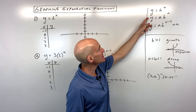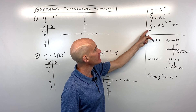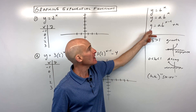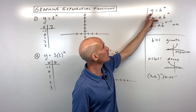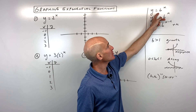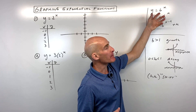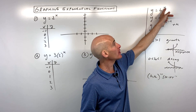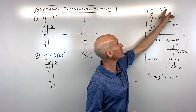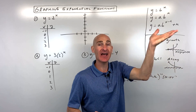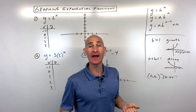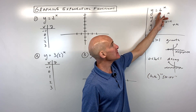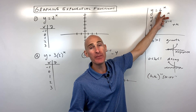These exponential functions are usually in one of three forms. The first form is the parent function, y equals b to the x power. Notice that variable x is in the exponent position — that's why we call it an exponential function. The b is what's called the base.